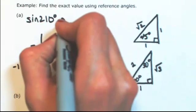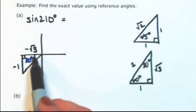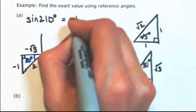So from this picture, I can easily find the sine. So the sine is going to be opposite over hypotenuse, so negative 1 half.